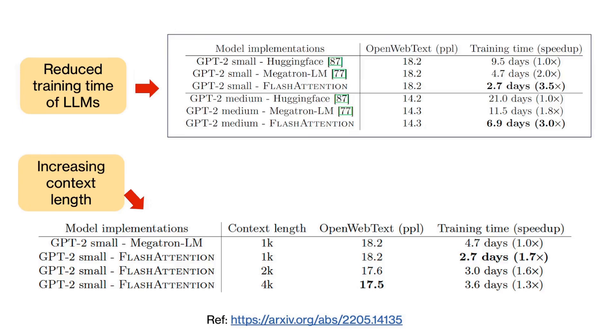Here in the first table we see the training time for GPT-2 small and GPT-2 medium. We can see that flash attention has reduced the training time of GPT-2 medium from 21 days to under 7 days, so three times faster. Furthermore, another advantage is that now we can increase the context length, which also results in higher quality models.